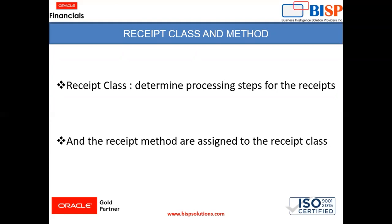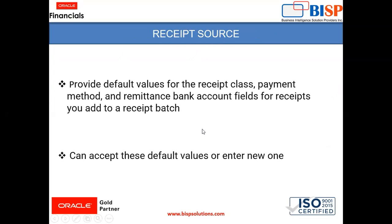Before that, there is one more concept of the receipt source. Receipt source is not mandatory to create a receipt — we don't need a receipt source to create a receipt, but it is mandatory for creating a receipt batch. When we give a receipt source in the instance, it provides a default value for the receipt class, method, payment method, and remittance bank account field for receipts you add to a receipt batch. You can choose the default value or enter a new one.